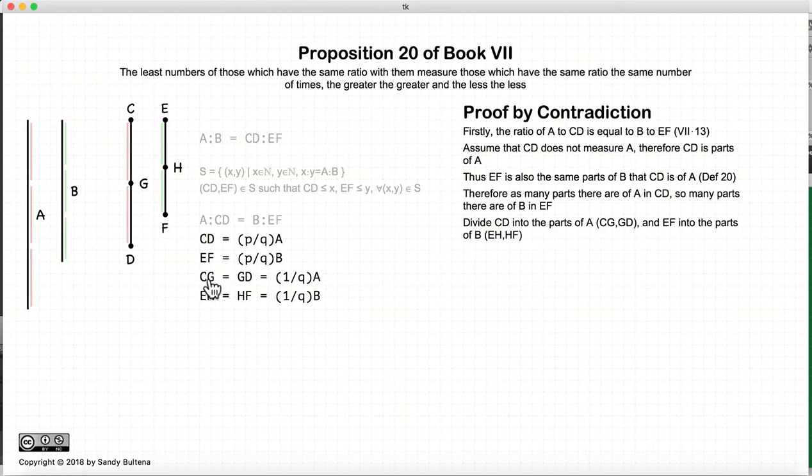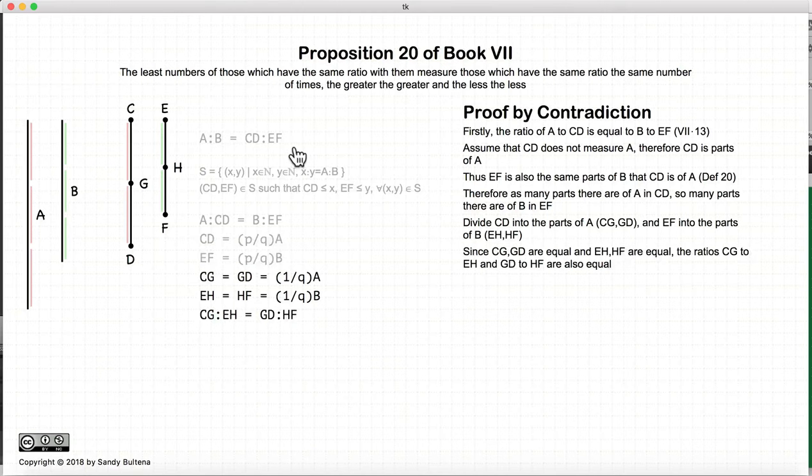And CG is equal to one part of A, not parts, but part. All right. So CG is equal to one part of A, and EH is equal to one part of B. Now since these ratios or these numbers are equal, CG is equal to GD and EH equals HF, then CG to EH will be equal to GD to HF. Make sense?